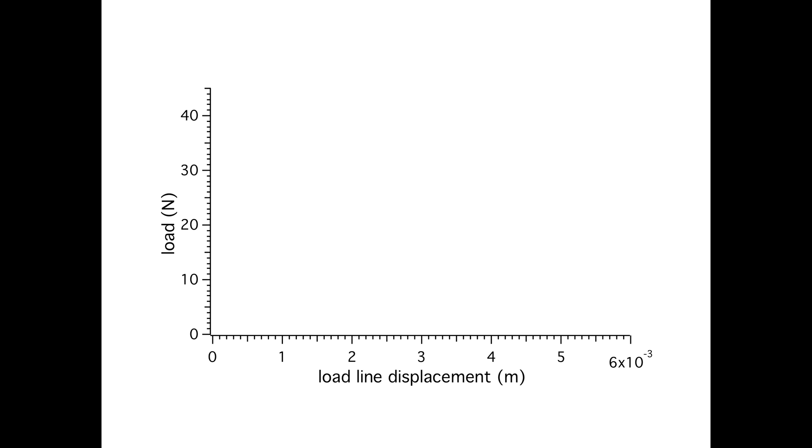So the output is load versus load line displacement. When you commence the test, you observe an initial linear response as your beam loads and begins to store elastic strain energy prior to debond initiation. We call this beam loading.